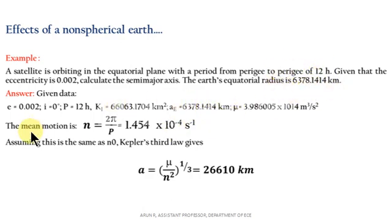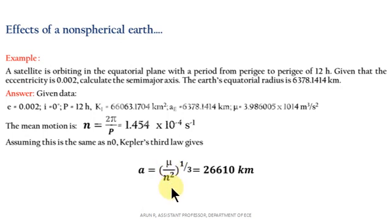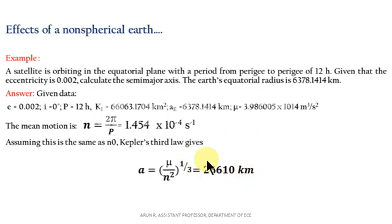We have the equation n = 2π/P. By substituting the value of n and the given value of μ into the equation, we can obtain the value of a, the semi-major axis.